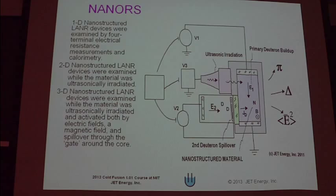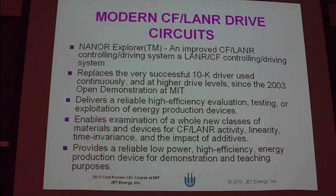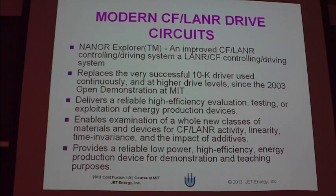What we did is make what we call the cold fusion transistor, where we're putting an applied electric field intensity in here, loading a second way here, and looking at the effect of ultrasonic irradiation. This was before we learned how to really do it and get it preloaded. The thing that really helped us was what we called the NanoR Explorer, which is a whole automated circuit for running these devices. Using the baseball analogy: the calorimeter is the stadium, the NanoR is the batter, and the NanoR Explorer is the pitcher-catcher that controls how much electric current is going to the NanoR.